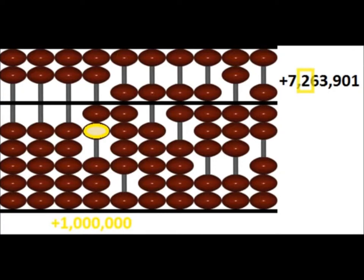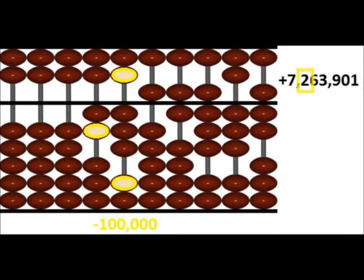Similarly, there isn't enough beads to add 2 in the hundreds thousands column, so we push up 1 earth bead in the millions column, followed by pushing up 1 heaven bead, and pushing down 3 earth beads in the hundreds thousands column. This will give us 2.